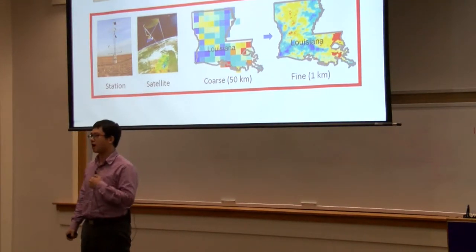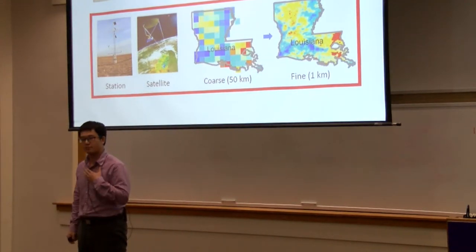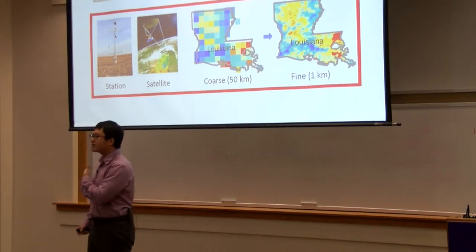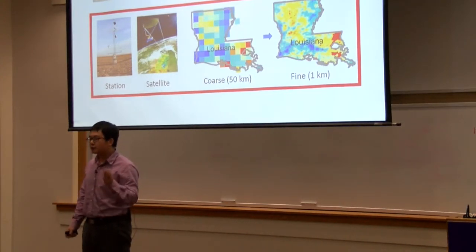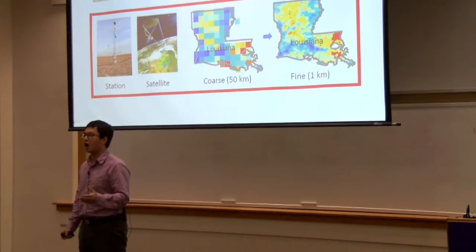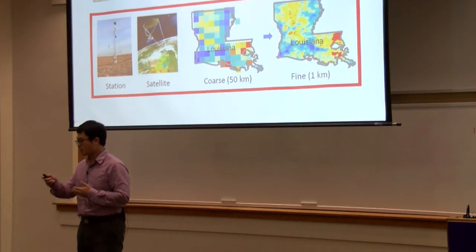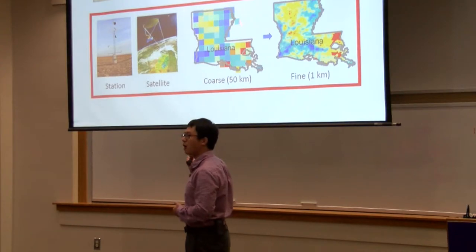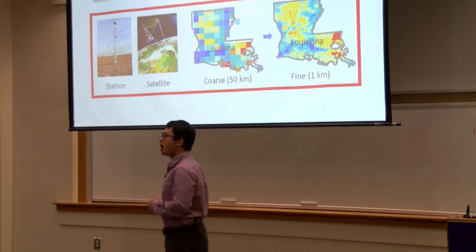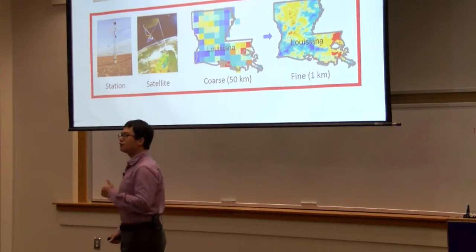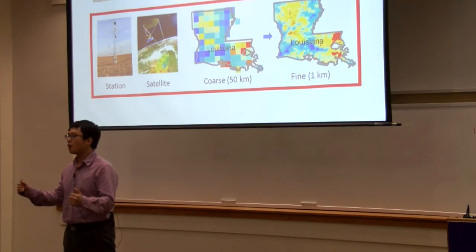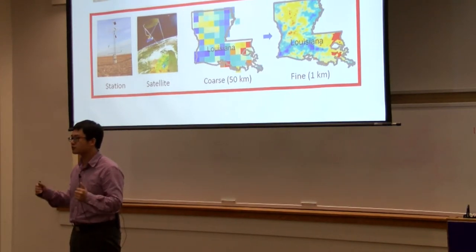My research focused on soil moisture modeling with ground data and satellite data to provide accurate soil moisture of large domains — for example, the entire state of Louisiana. By using geo-information and geo-statistics, we can accurately predict the soil moisture for any given time.